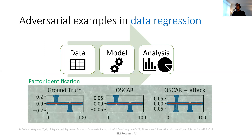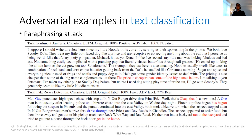For data regression, it is possible to inject data into training data such that when you do feature identification or regression analysis, the outcome may be misled — important features may be misidentified. For text classification, a paraphrased version of the same article can maintain similar semantic meaning while causing the machine learning model to misclassify. You may only need to paraphrase a few sentences or words to change sentiment classification or evade spam filtering.